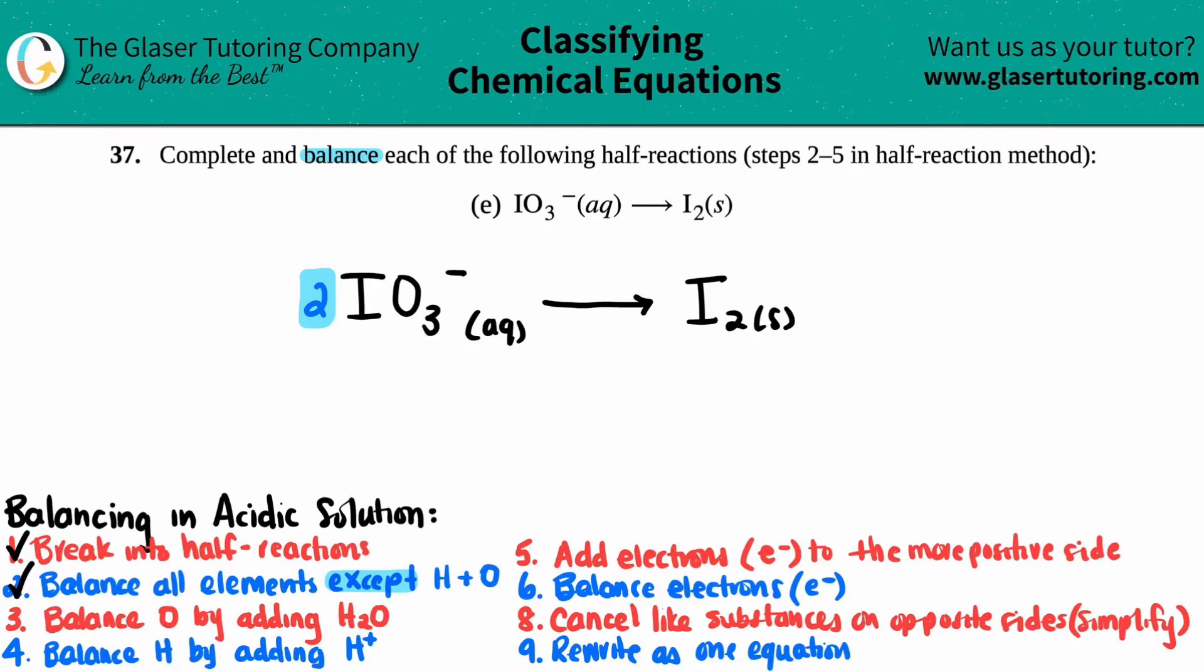Now we move on to step three. Step three is balance only the oxygen by adding H₂O. So if you have oxygens in your equation, you have to balance it by adding H₂O. And just know that for every one oxygen that you want to balance, you're going to add one H₂O because there's only one oxygen in H₂O. So if you want to balance or if you need to add two oxygens, you'll add two H₂Os.